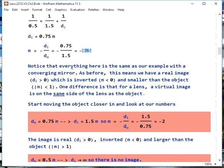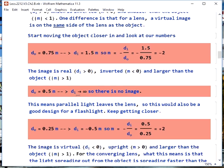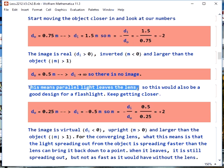There is one difference for a lens compared to a mirror, and that is a virtual image is on the same side of the lens as the object. As we start moving in closer, we watch for things to change. Change the object distance to 0.75 meters. The image distance is now 1.5 meters, so our magnification becomes negative 2. The image is real, inverted, and larger than the object. We move into one focal length away so that the object distance is 0.5 meters. Di goes to infinity, so there is no image, meaning parallel light leaves the lens and this is another good design for a flashlight.